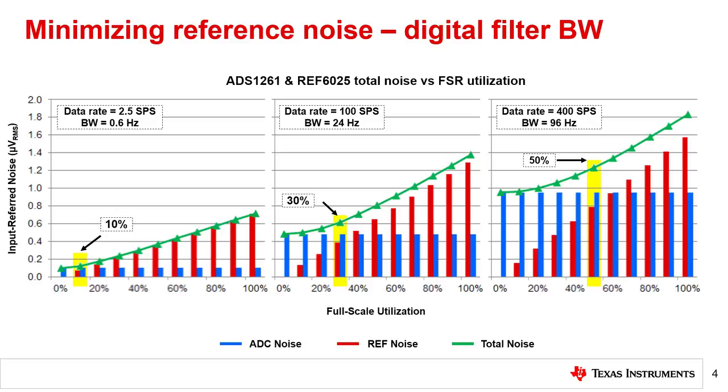Shown here are three full-scale utilization plots at different bandwidths using the ADS1261, the 24-bit Delta Sigma ADC used in the previous Precision Labs modules on reference noise. The reference used is the REF6025.